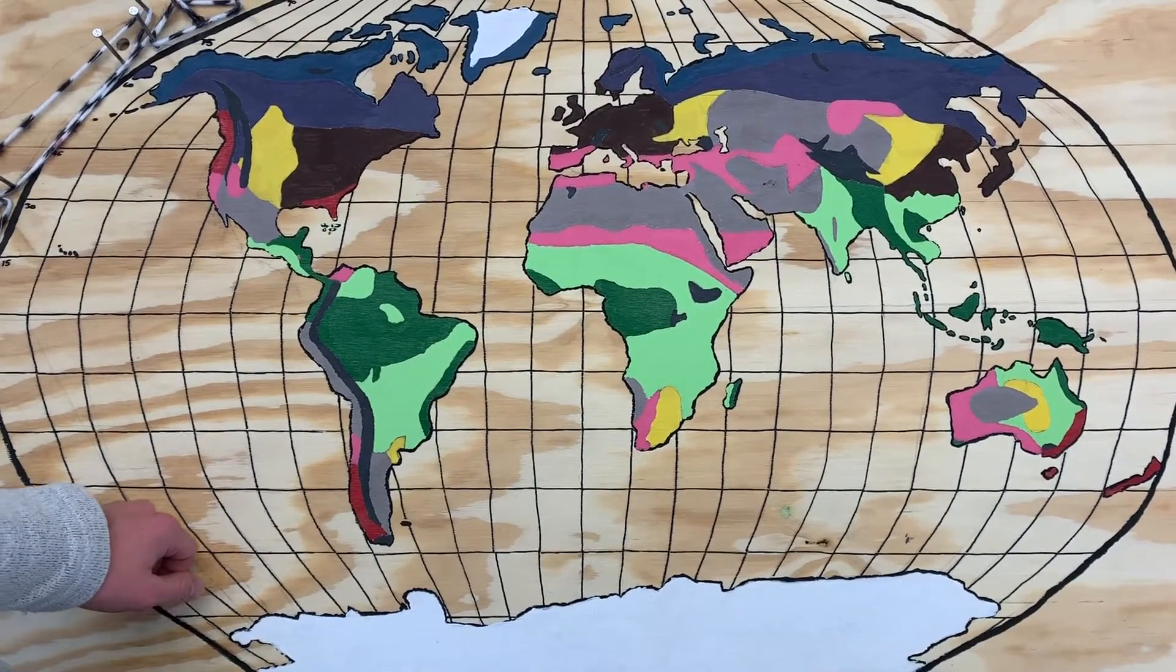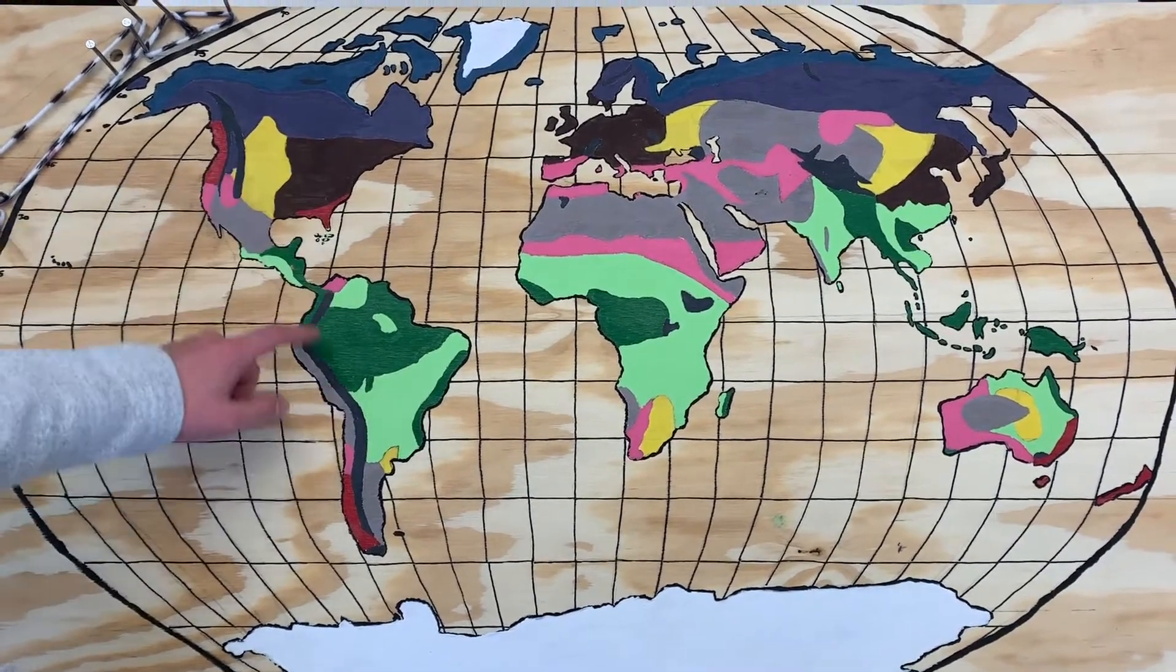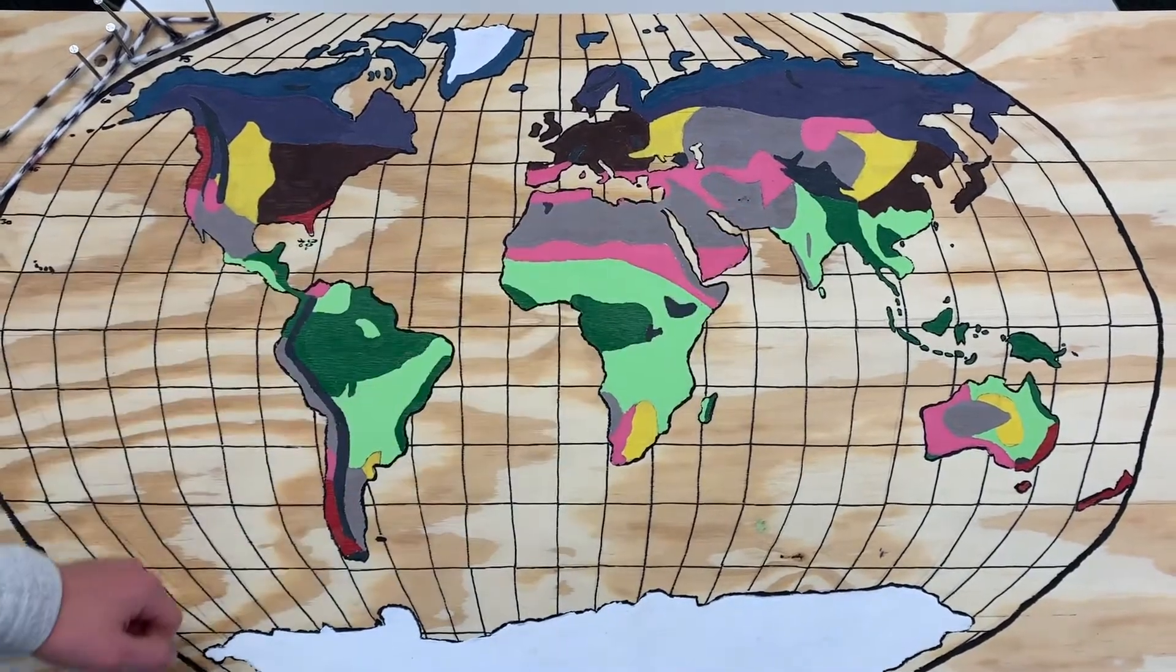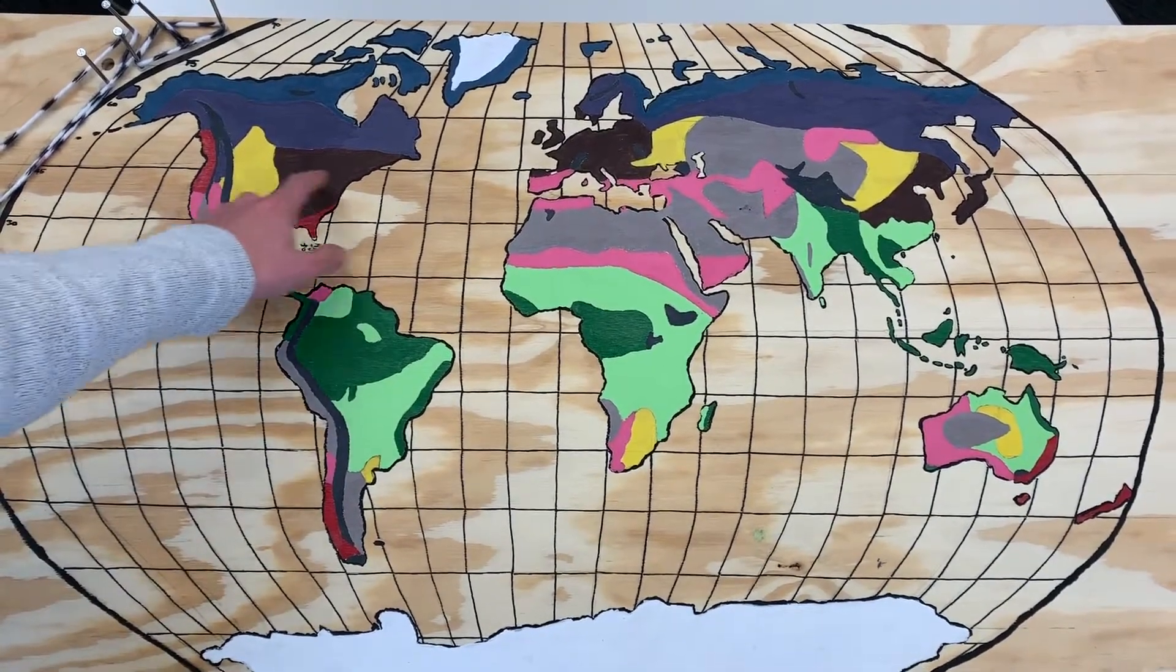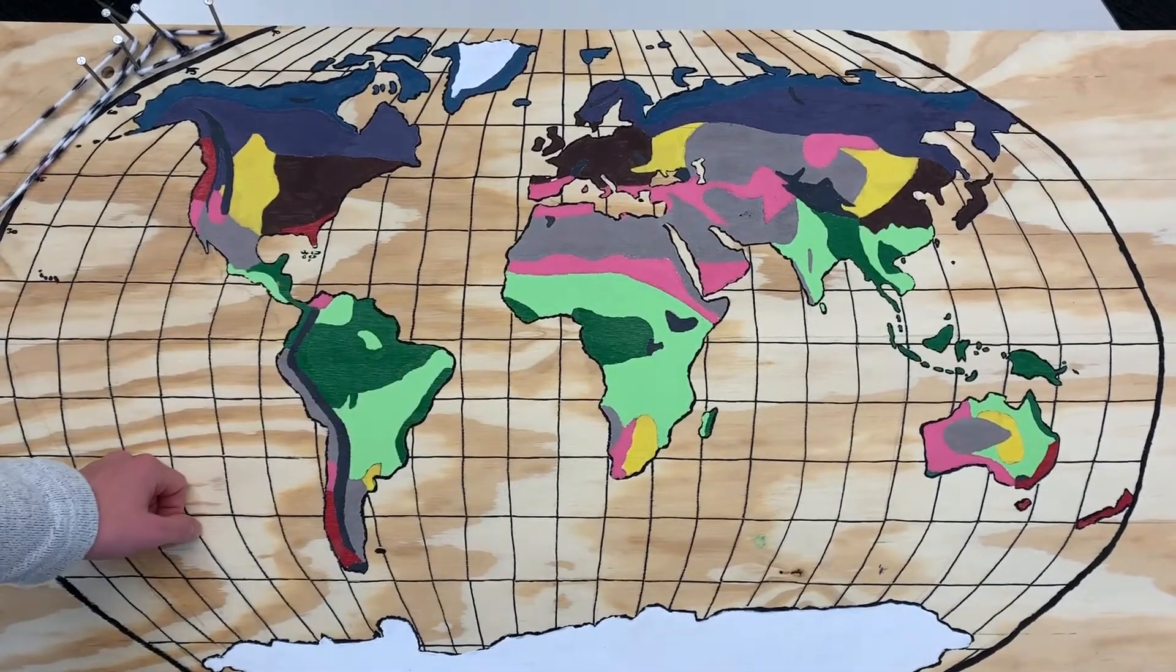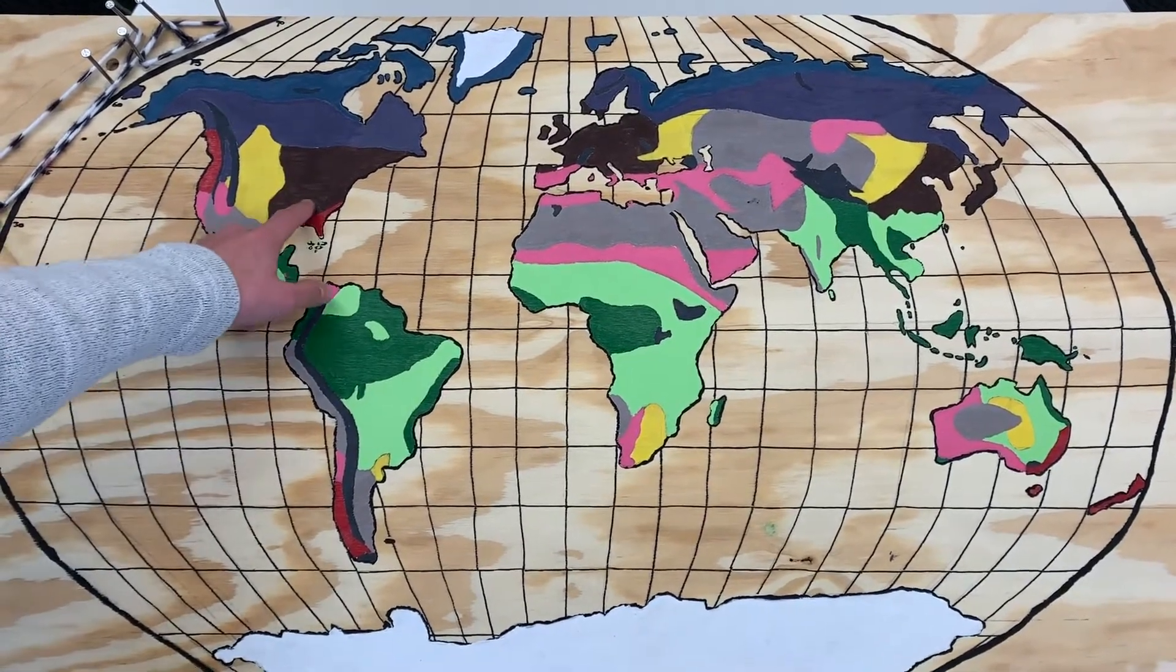We'll continue moving out from the equator and as we see more in the northern hemisphere than the southern, we have these brown areas and these yellow areas. These are temperate grasslands and our temperate forest areas.